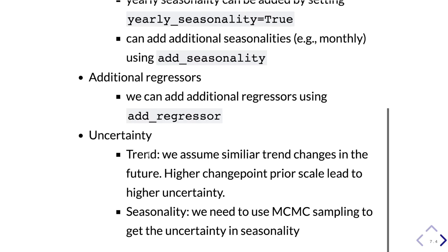Finally, when we model the time series and predict the future, we get a confidence interval representing the uncertainty in our data. In the trend model, we assume there are similar trend changes in the future; therefore, a higher changepoint prior scale leads to higher uncertainty. For seasonality, this uncertainty is not directly embedded in the model, so we need to use MCMC sampling to capture the uncertainty in seasonality.